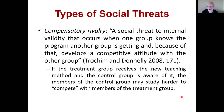Compensatory rivalry is a social threat that occurs when one group knows what program another group is getting and develops a competitive attitude. If the treatment group receives the new teaching method and the control group is aware of it, members of the control group may study harder to compete. So the control group does better than expected — not because the new teaching method didn't work, but because those using the old method studied so much more than they normally would have.